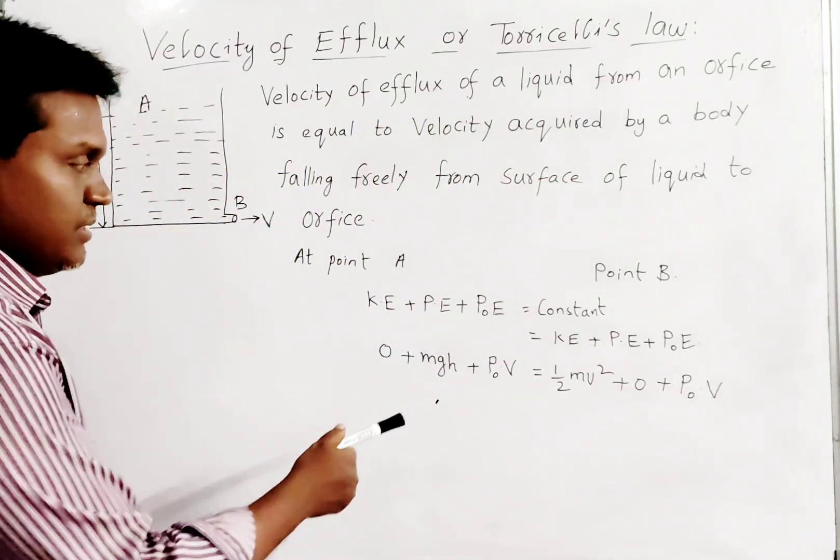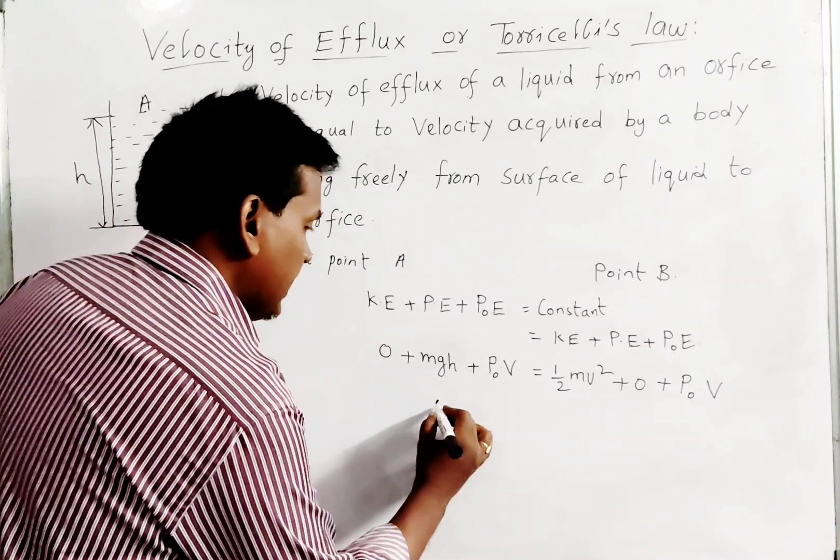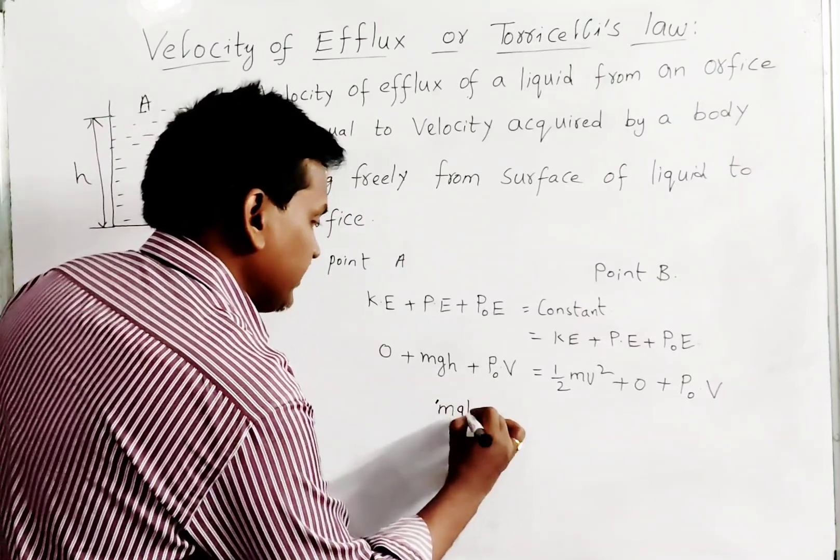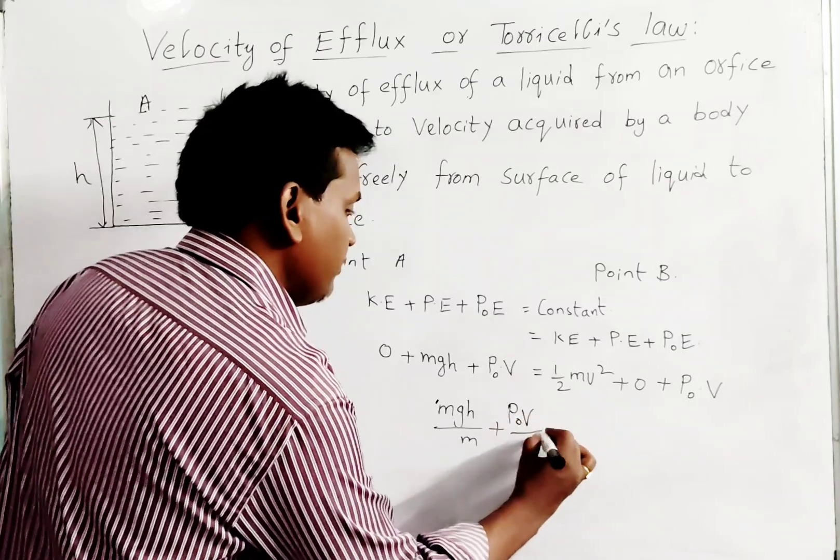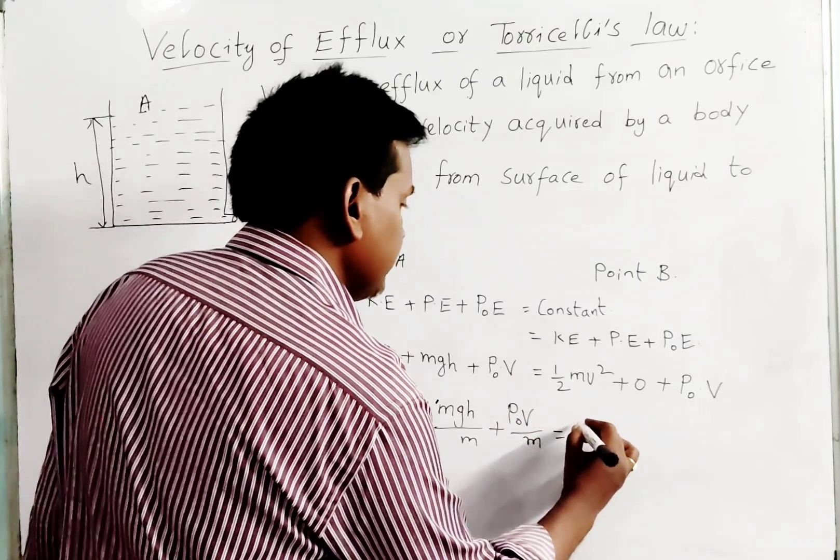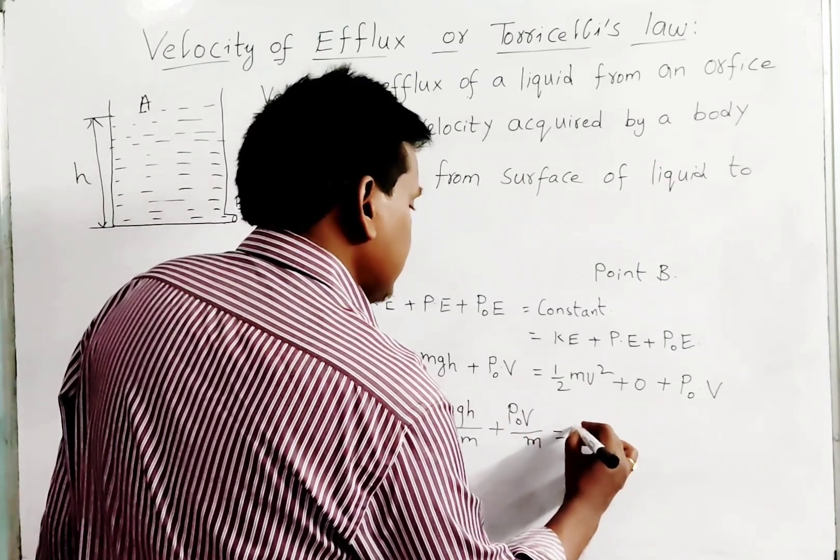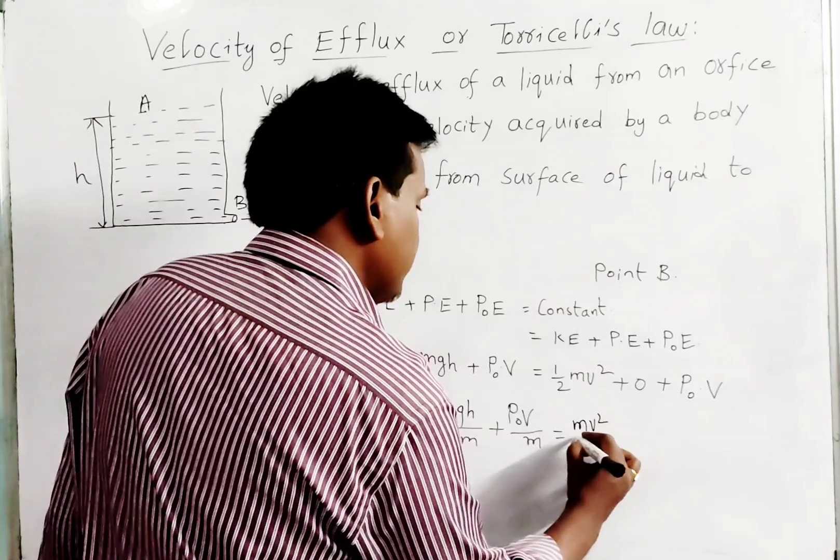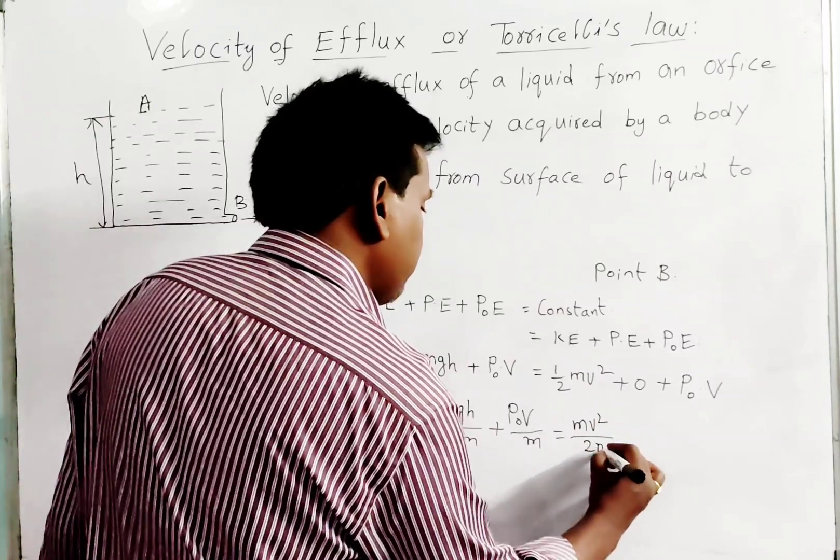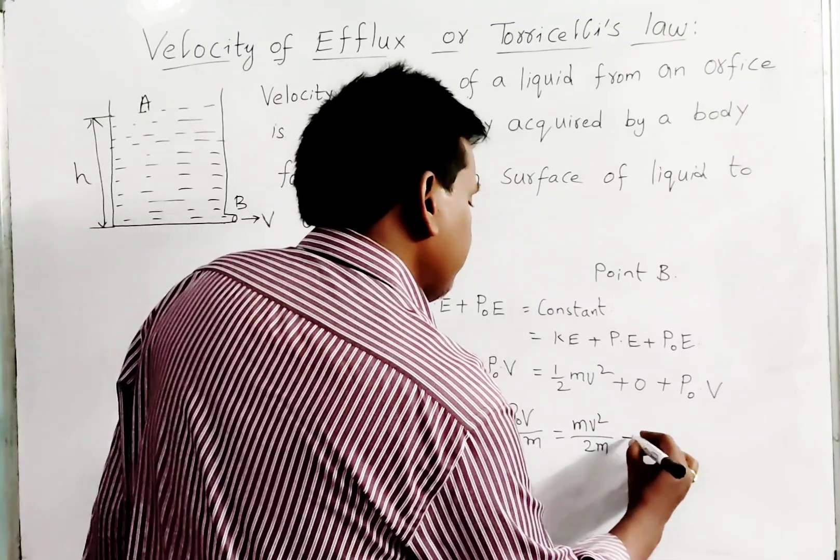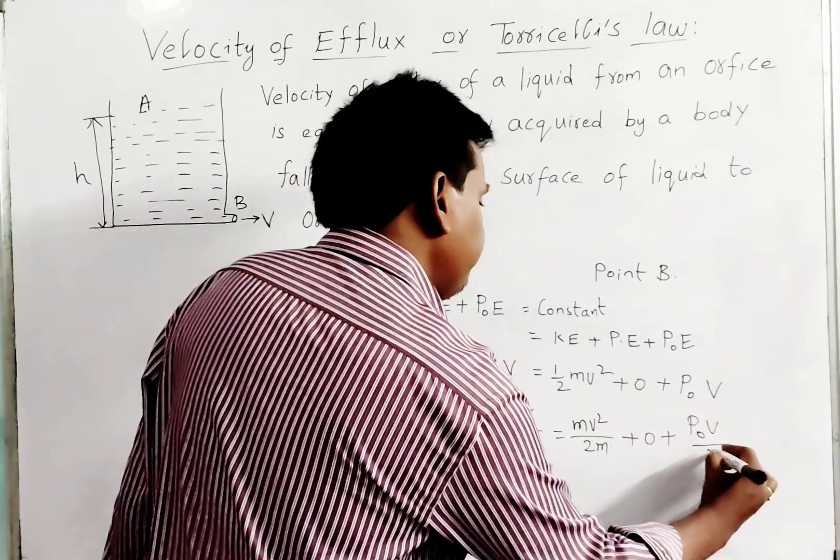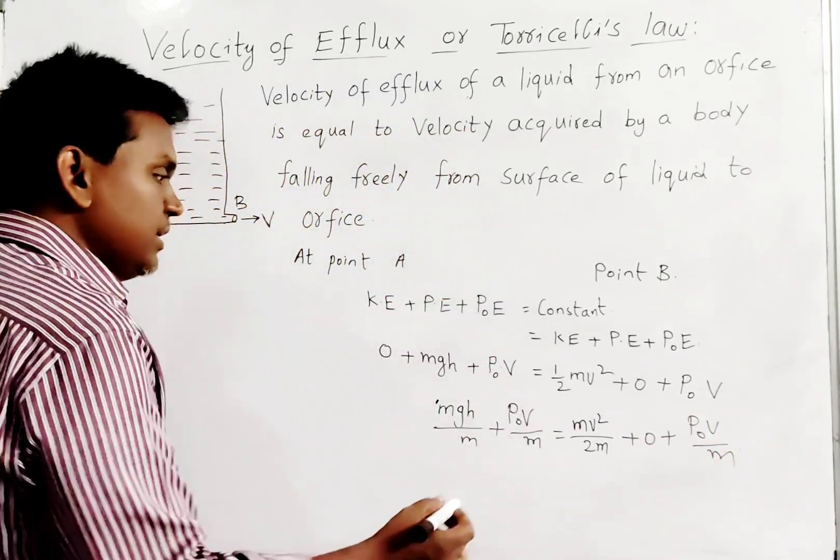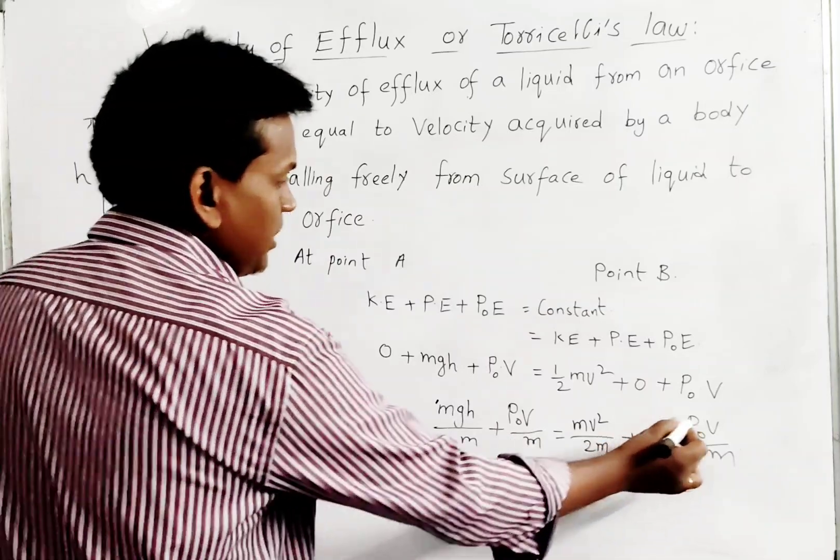Divide this equation with M. We will have Mgh/M plus P₀V/M, and that equals Mv²/2M plus 0 plus P₀V/M.